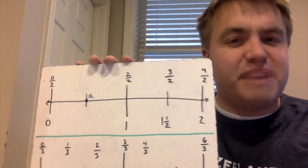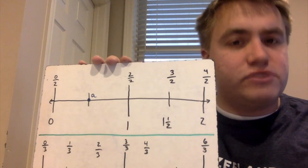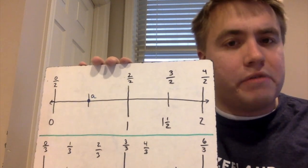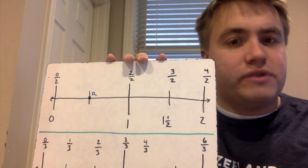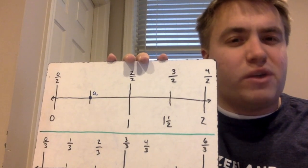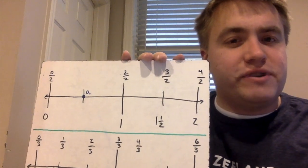Then to my next biggest mark, I have two-over-two, which also equals one, three-over-two, which also equals one-and-one-half, or four-over-two, which also equals two.